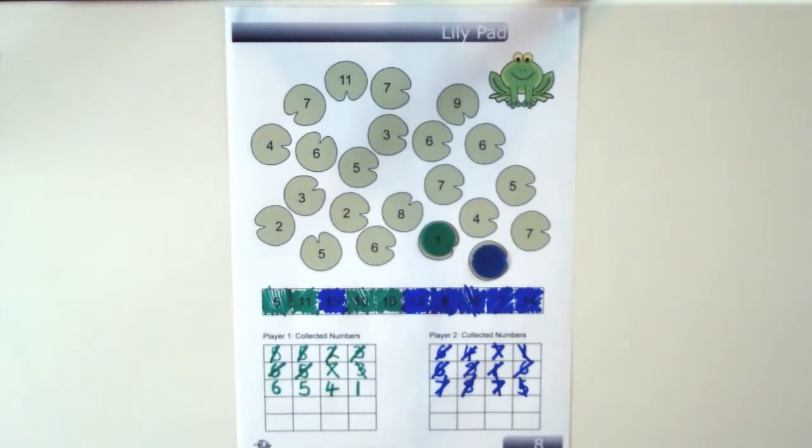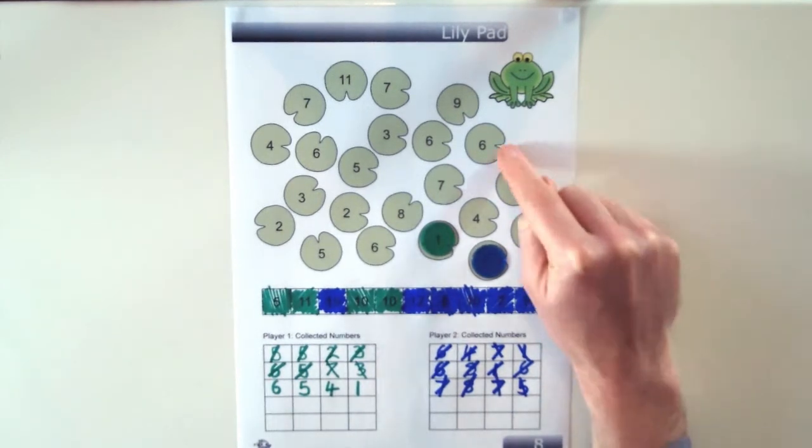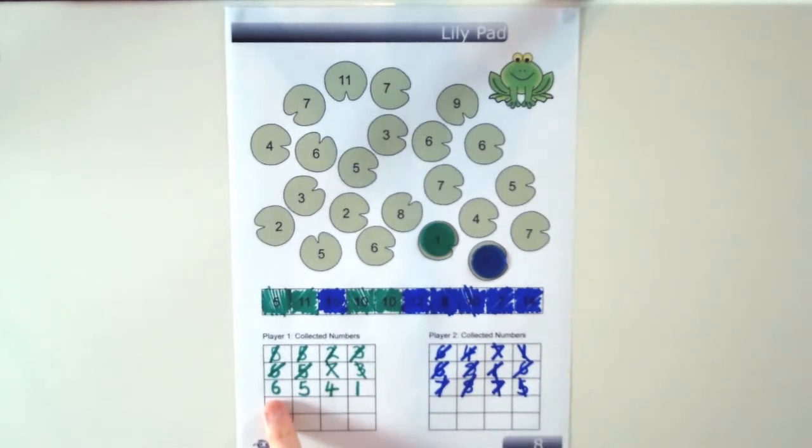Now if the green player had thought of it they could have actually made 12 by adding 6 plus 5 plus 1. So part of the skill of playing this game is thinking about which path you're going to take to land on the right numbers. But also being aware of what number combinations you have and thinking about which numbers a player can put together to be able to equal a target number.